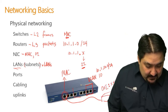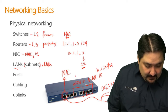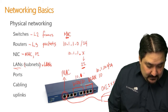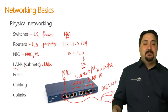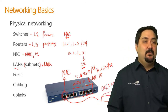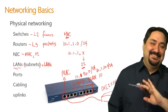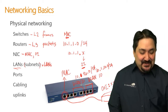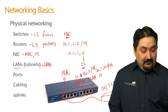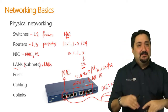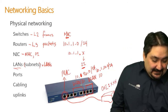VLAN 20 belongs to the 10.1.20.0/24 network — though the IP address could be completely different; that's just good administration. VLAN 10 and VLAN 20 are completely separated — they're on different VLANs and different local area networks. I like to think of VLANs as layer 2 domains.